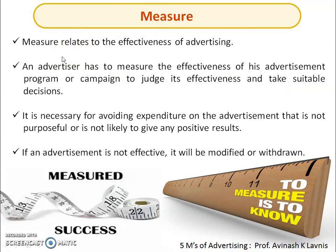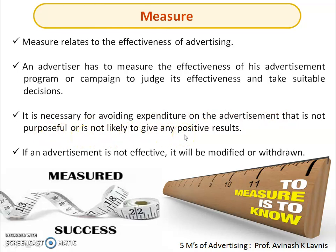The last M is Measurement. Whatever you are doing, you must check whether it is going in the correct direction. If not, you need to take corrective measures — that is what measurement is about. It basically relates to the effectiveness of the advertising. The advertiser must measure the effectiveness of the advertising program or campaign to judge its performance and take suitable decisions. It is necessary to avoid expenditure on advertising that is not purposeful or unlikely to give positive results. If an advertisement is not effective, it must be either modified or withdrawn, and a new advertisement created.